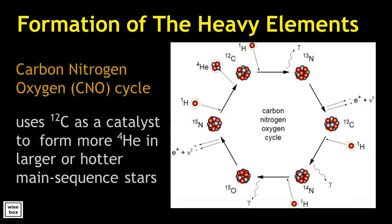The carbon-nitrogen-oxygen, or CNO cycle, uses the carbon-12 atom as a catalyst to form more alpha particles, or helium-4 atoms, in larger or hotter main sequence stars.